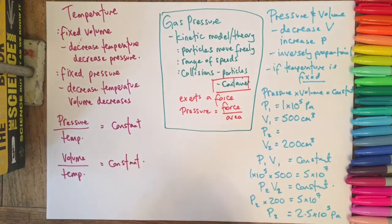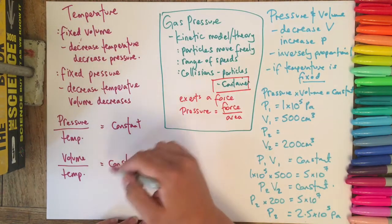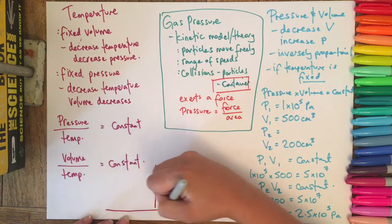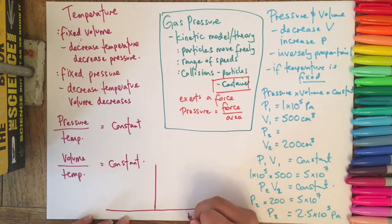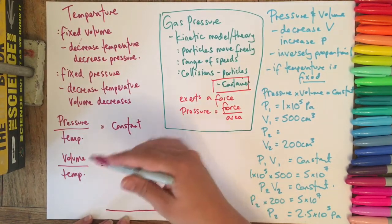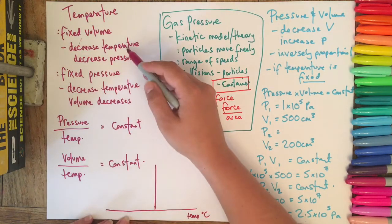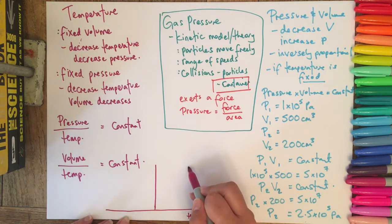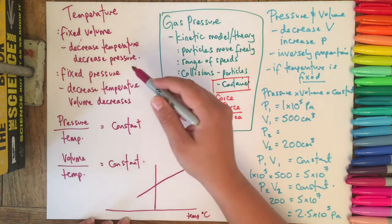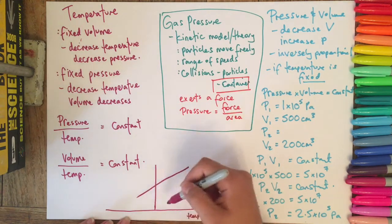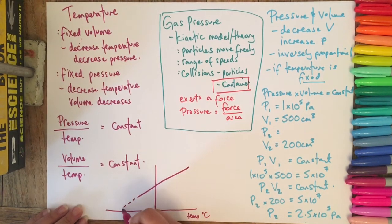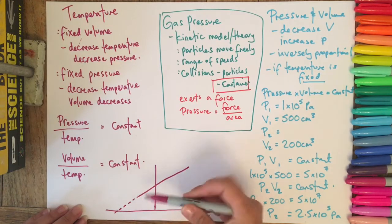So where this links in is when we start graphing this. If for example we were looking at either pressure and temperature or volume and temperature, and we graphed this on a set of axes, so let's say this is the temperature in degrees Celsius and this y-axis could be either volume or pressure so I'm not going to label it. We know that if we decrease the temperature we decrease the pressure, we're going to end up with a line that looks something like this. So we can see that they're proportional because as one increases the other increases, as one decreases the other decreases.